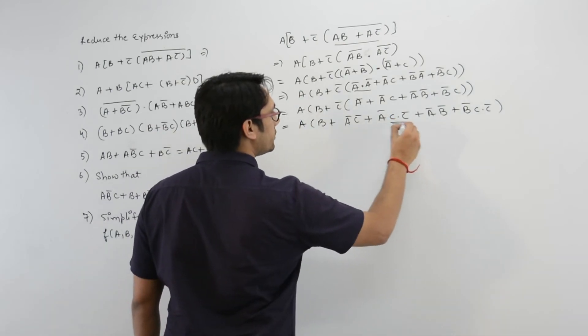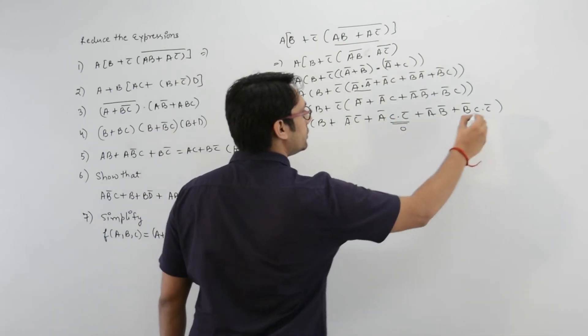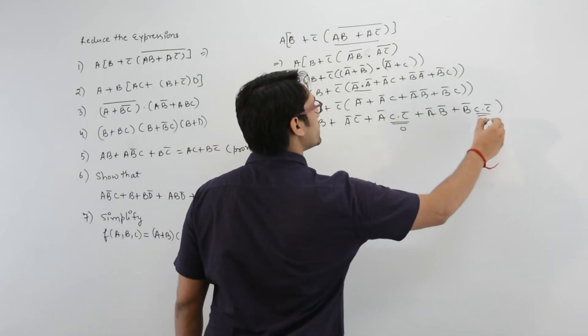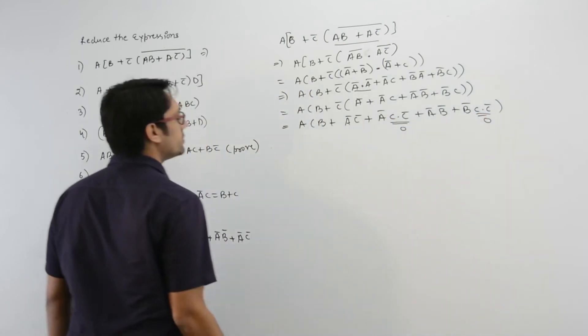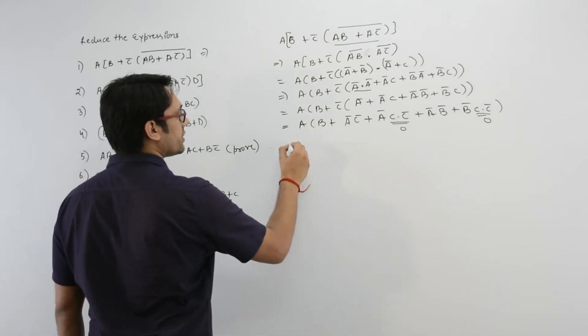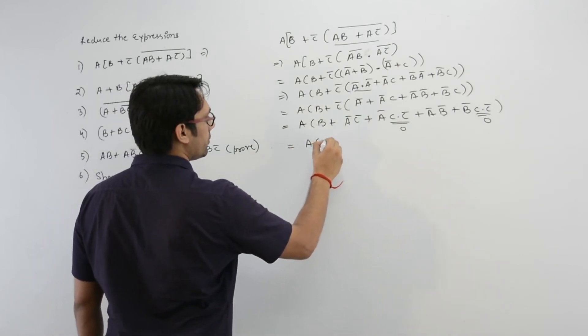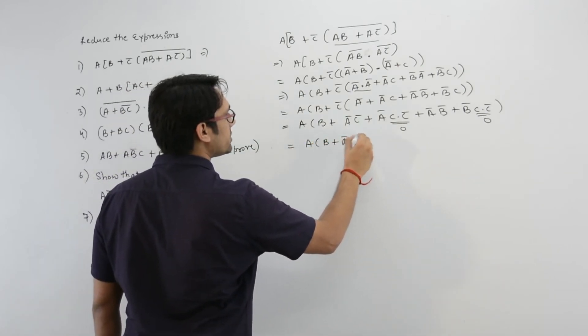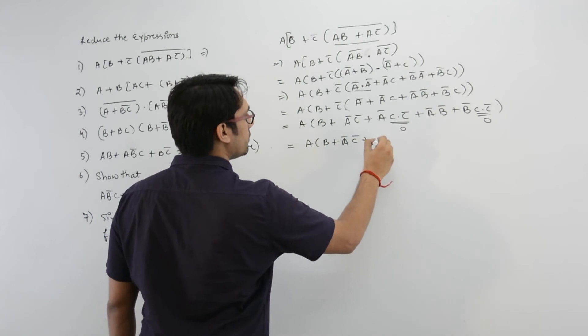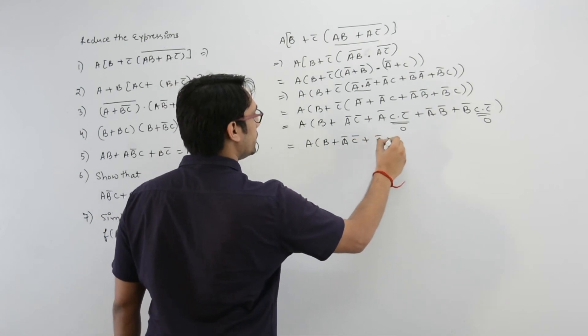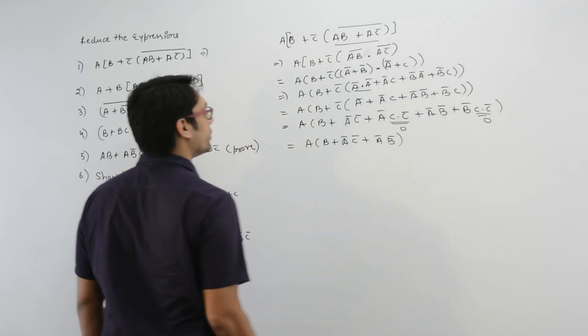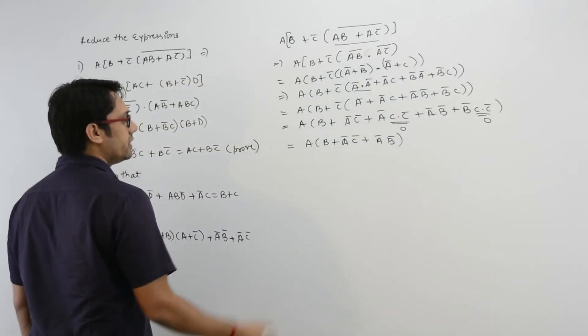It can be written as 0. So the expression will be ab plus a complement c complement plus a complement b complement only.